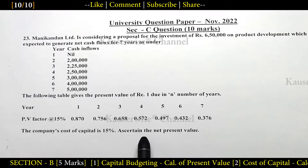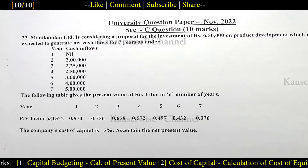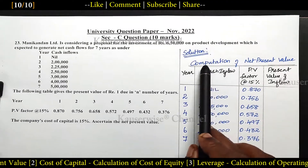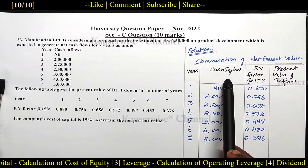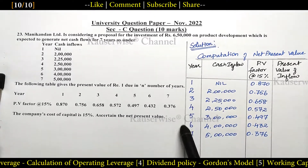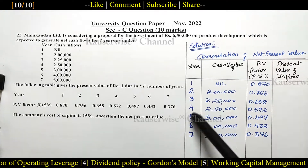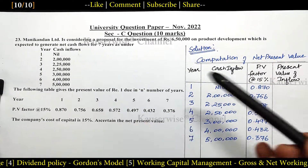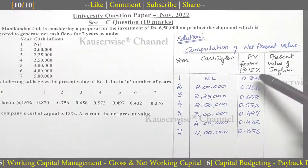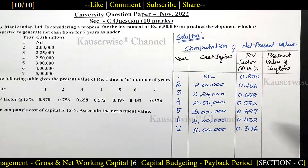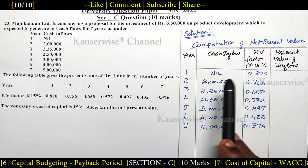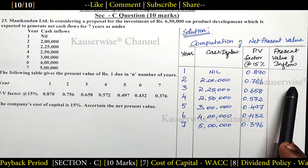With this information we are asked to ascertain the net present value. We need to find out NPV, that is net present value. Now let's see the solution: computation of net present value. The table has columns for year, cash inflow, PV factor at 15%, and present value of inflow. I have entered all the information from the problem — 7 years, cash inflow, and PV factor at 15% — all taken from the question. With this I am going to calculate present value of inflow by multiplying cash inflow with PV factor.